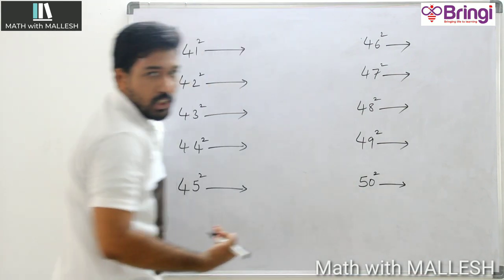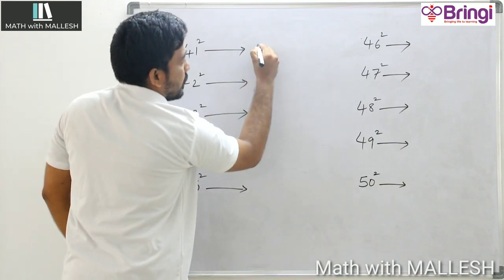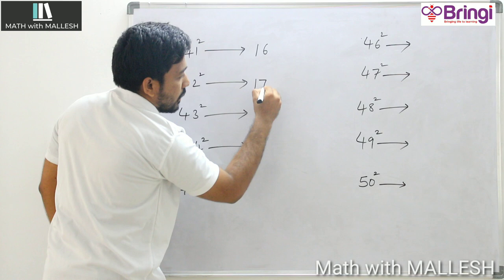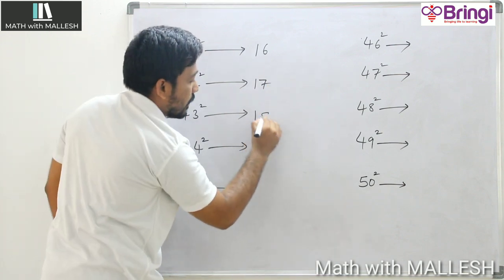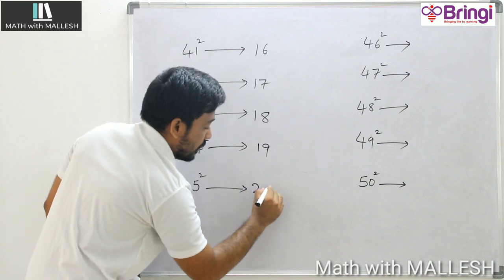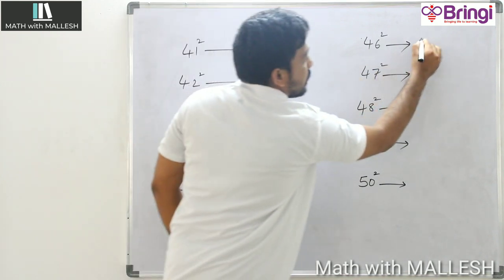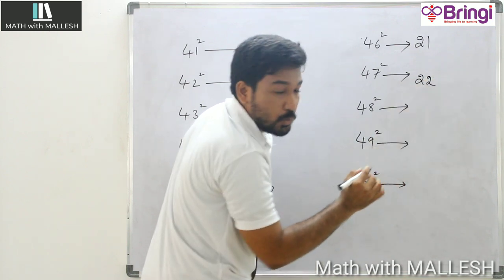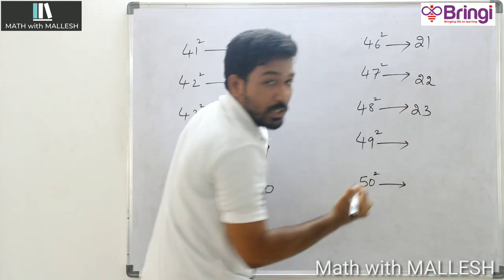43 square till 50 square. Now write: 16, 17, 18, 19, 20, 21, 22, 23.